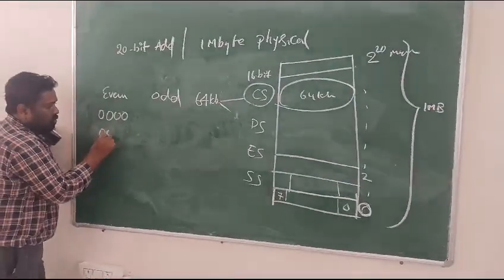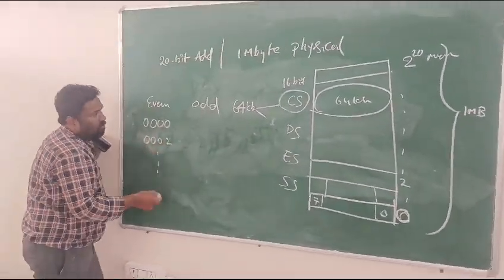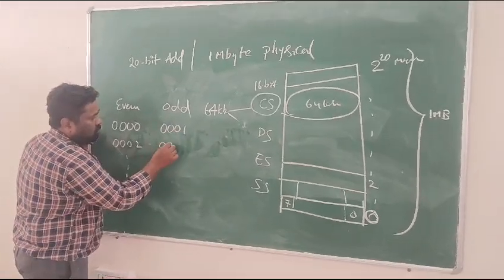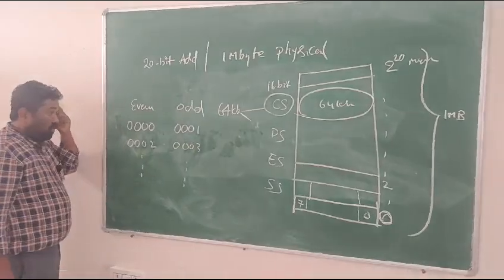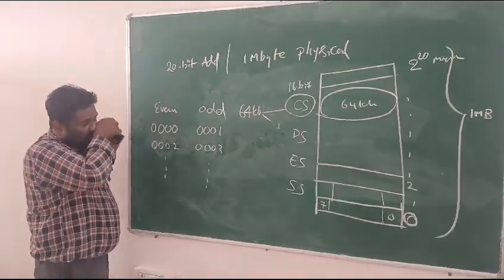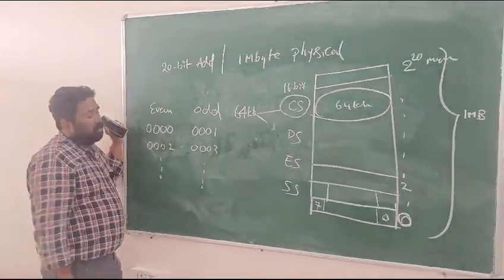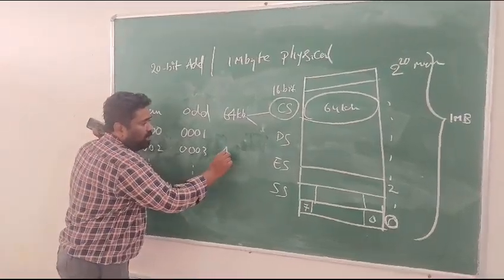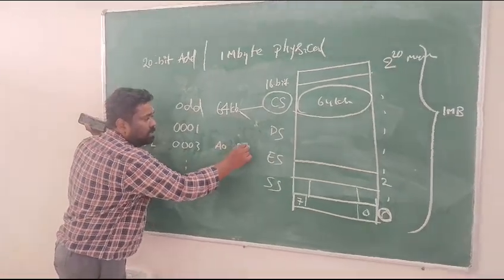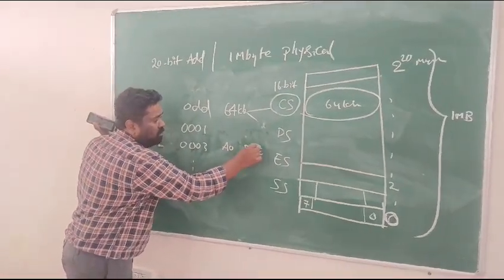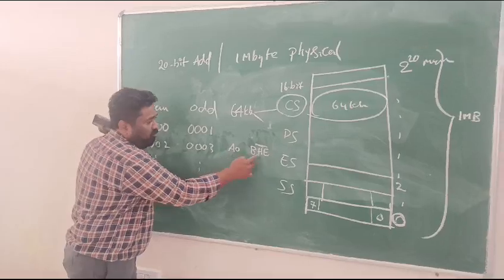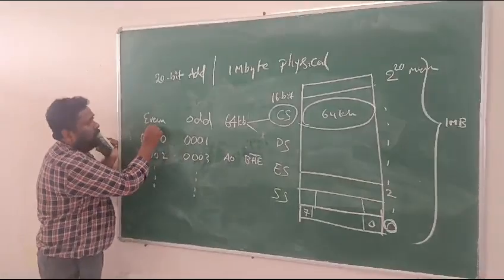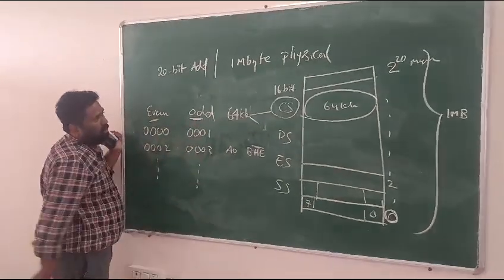So even memory bank addresses are represented by 0-0-0, 0-0-2, likewise. Odd memory banks are represented by 0-0-1, 0-0-3 and so on. So these are selected by 2 bits in processor. Those are what we call A0 and BHE signal, Bus High Enable signal. By using these 2 lines we can select either even address bank or odd address bank.